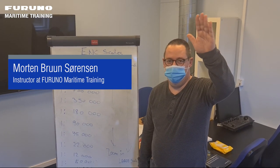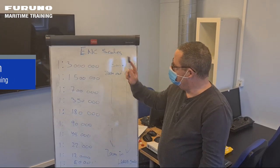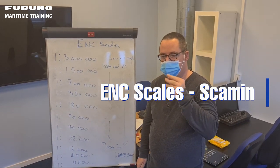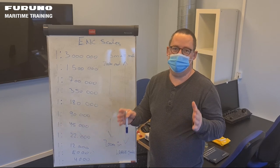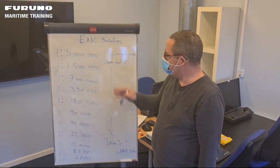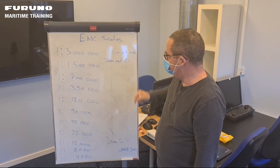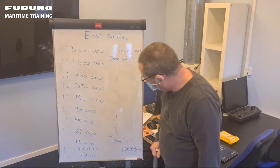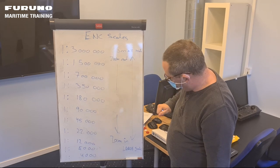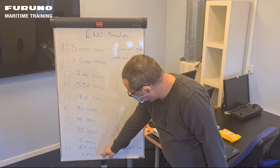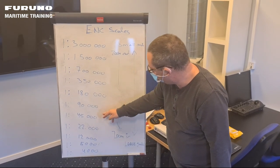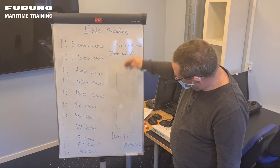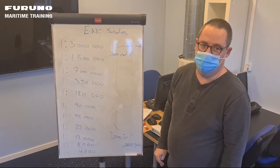Welcome back. Today I'd like to talk about the ENC scales, and we'll also address one of your common questions: what is SCAMIN? Just to recap something you probably already know — we have the scales here. The first is one to three million, and down to one to four thousand. This is the small scale, and down here is the large scale, used for berthing charts, approach charts, coastal charts, and so on. When you zoom out you go to a smaller scale, and zoom in means you go to a larger scale.